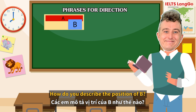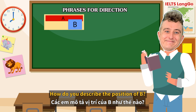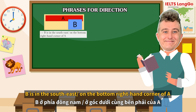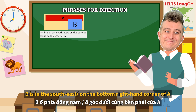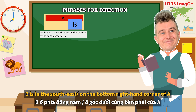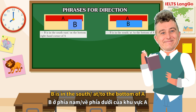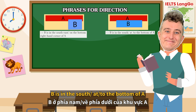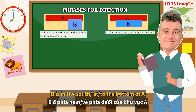How do you describe the position of B here? That's right — B is in the south-east, or B is in the bottom right hand corner. Now try this one: B is in the south, or in the bottom. B is at the bottom, or to the bottom of A.